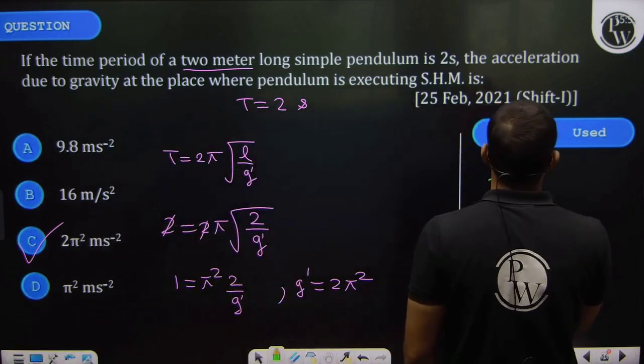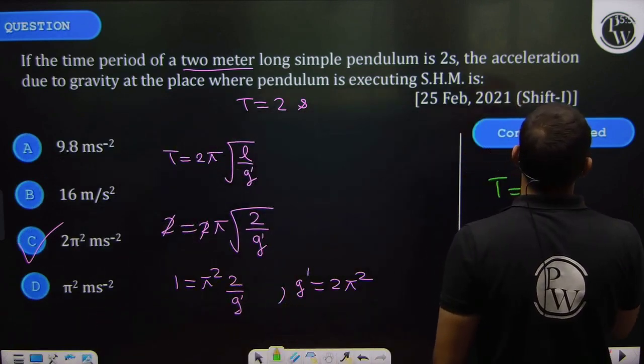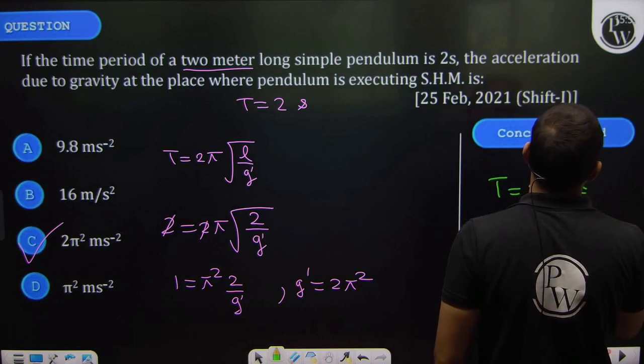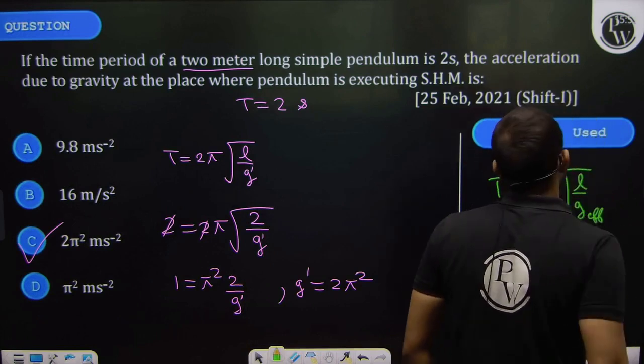T is equal to 2π under the root of L by G effective. This will be the correct answer.